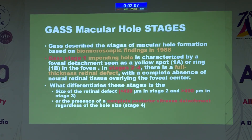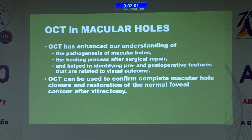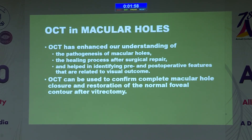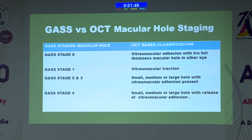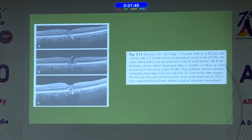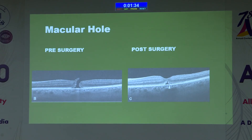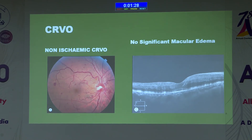Way back in 1988, Gass described the staging of macular hole based on biomicroscopic findings. OCT has enhanced our understanding of the pathogenesis and healing process of macular hole, and the changes noted on OCT have become the basis for a new classification system. Gass staging and OCT macular hole staging correspond to each other. This is a patient in which a stage one macular hole progressed to a full thickness macular hole, for which vitrectomy was done, with post-operative closure of the macular hole. Detection of macular hole is made very easy in cases of vascular occlusions.